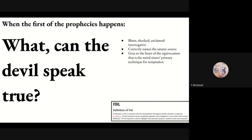When the first prophecy is fulfilled, Banquo blurts out, 'What, can the devil speak true?' — a blunt, shocked exclamatory interrogative that correctly names the satanic source and goes to the heart of the equivocation that is the Weird Sisters' primary technique for temptation: the devil speaking truth. Macbeth staggers and begins having visions of murdering Duncan, but Banquo immediately questions the nature of the people who've told them the truth — he sees the equivocation, and always sees through it.